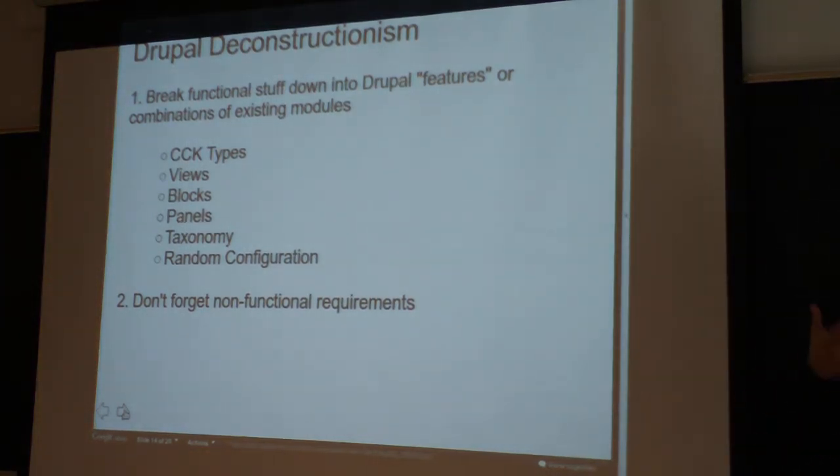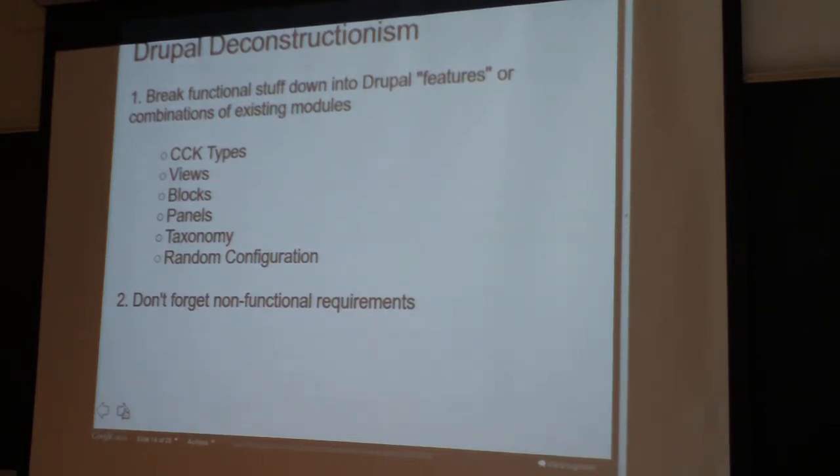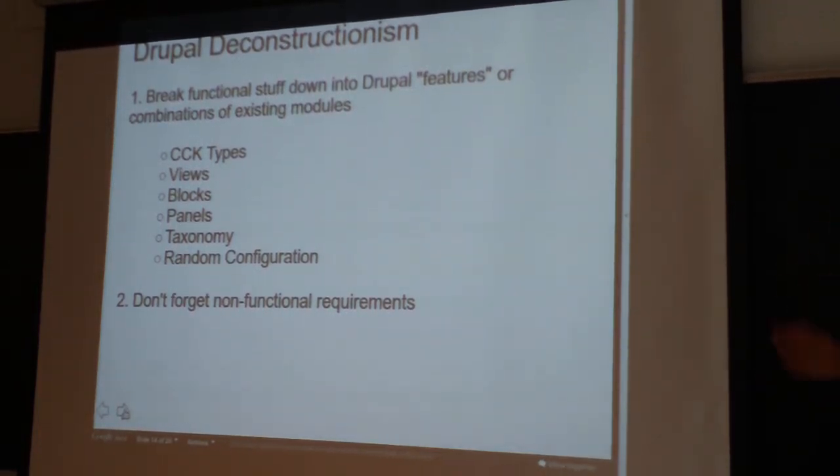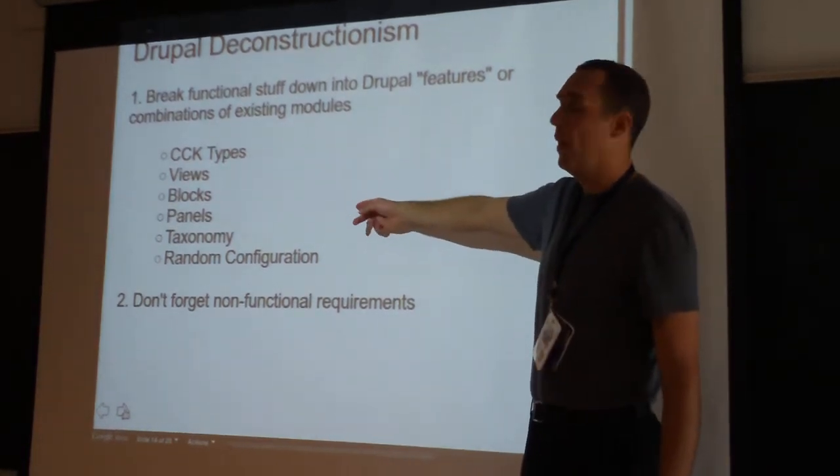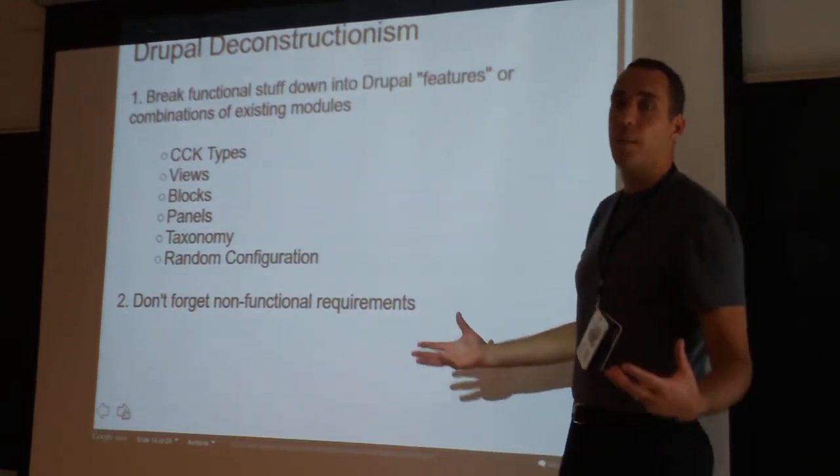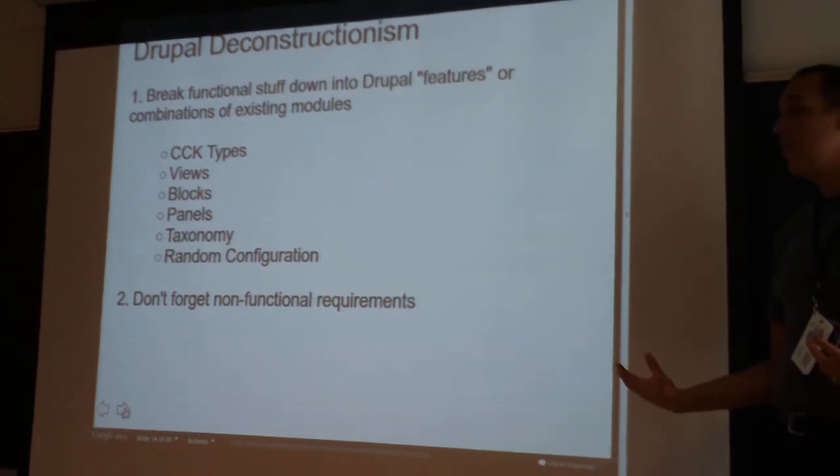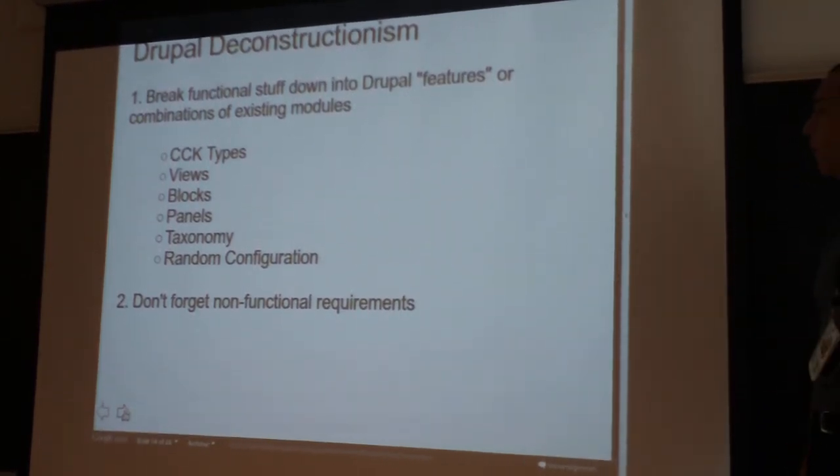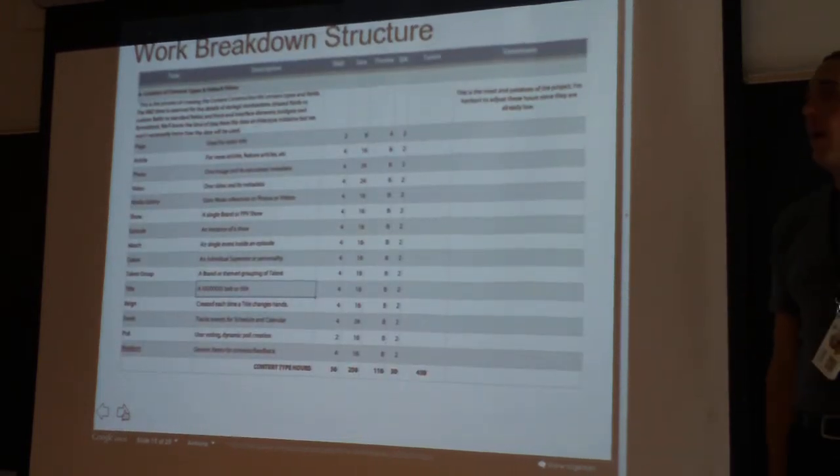Drupal gives us a new way to approach these problems. We can actually break down or decompose the project along the lines of Drupal, which I like to call Drupal deconstructionism in homage to Derrida. We break functional stuff down into Drupal features. That has a double meaning here. A feature could be something like a photo gallery, but there's also the features module. The features module is a way to capture groups of Drupal functionality like content types, views, blocks, panels, taxonomy, variables that you want to strong arm. You can create a feature, which is essentially a module. Don't forget about non-functional requirements.